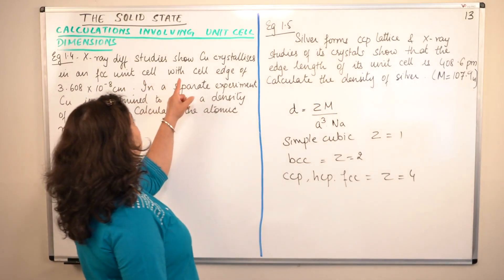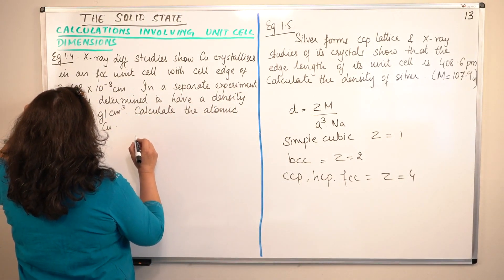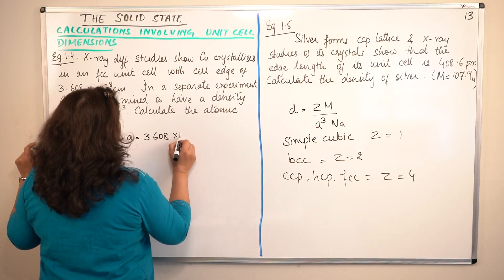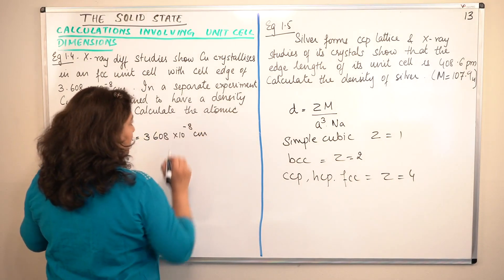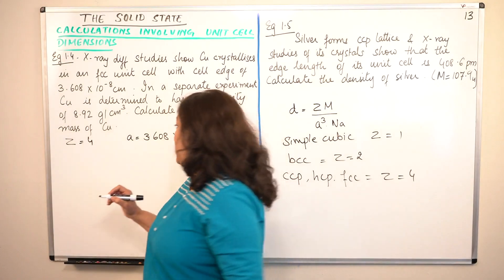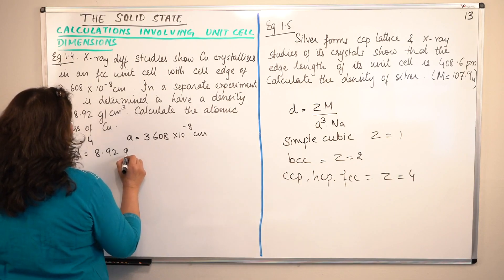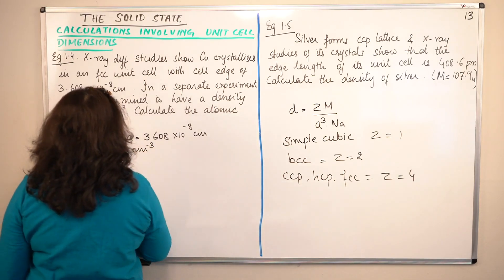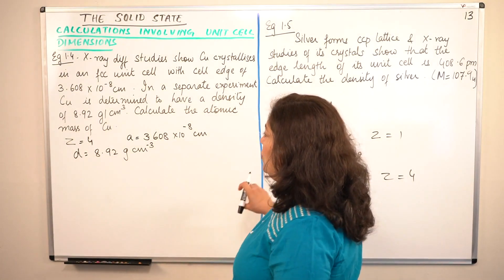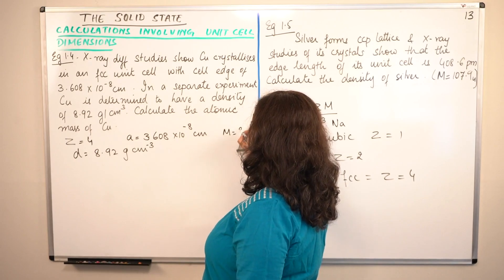The FCC unit cell has a cell edge A of 3.608 × 10⁻⁸ centimeter. In a separate experiment, copper is determined to have a density D of 8.92 grams per centimeter cube. What are we supposed to calculate? Calculate the atomic mass — that is, capital M is what we need to find.